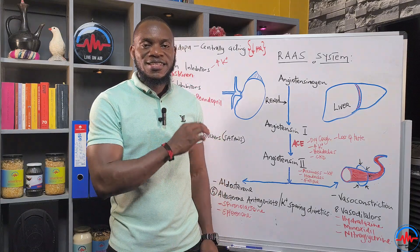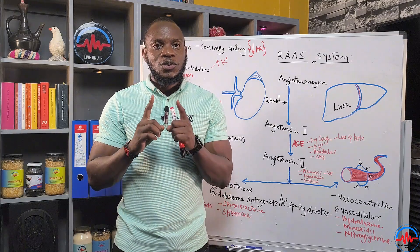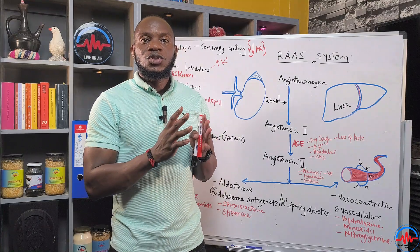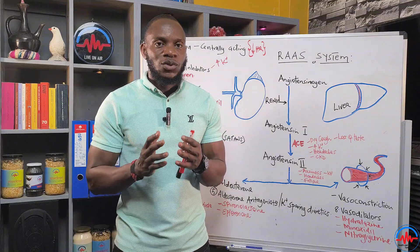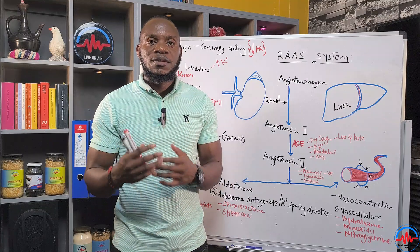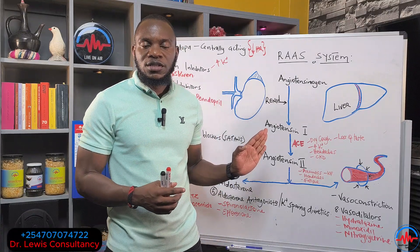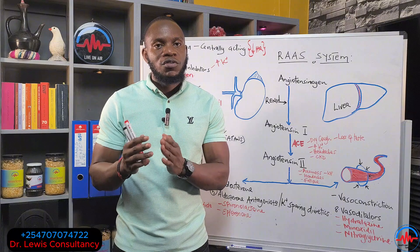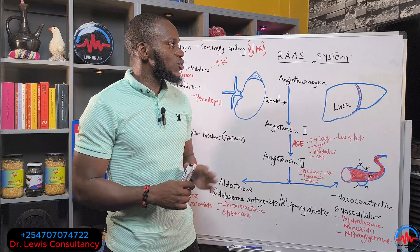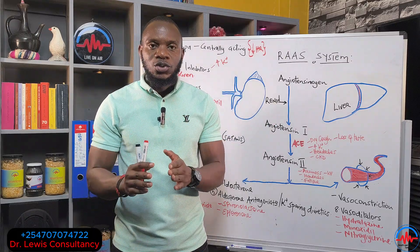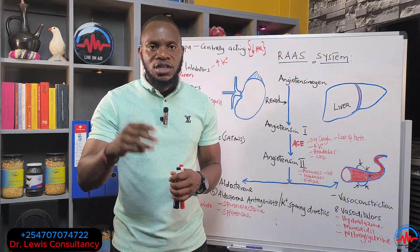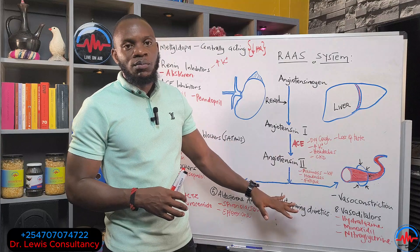Ladies and gentlemen, this is a secondary video to the video I did about the RAAS system. If you've not had a chance to watch that video, kindly go back and watch it — we'll put a link below. This video is supposed to educate you about the mode of action of those drugs that are used to manage hypertension: how do they work, where do they work. Most of the drugs for hypertension — three groups — come and work by blocking the renin-angiotensin-aldosterone system, the RAAS system.